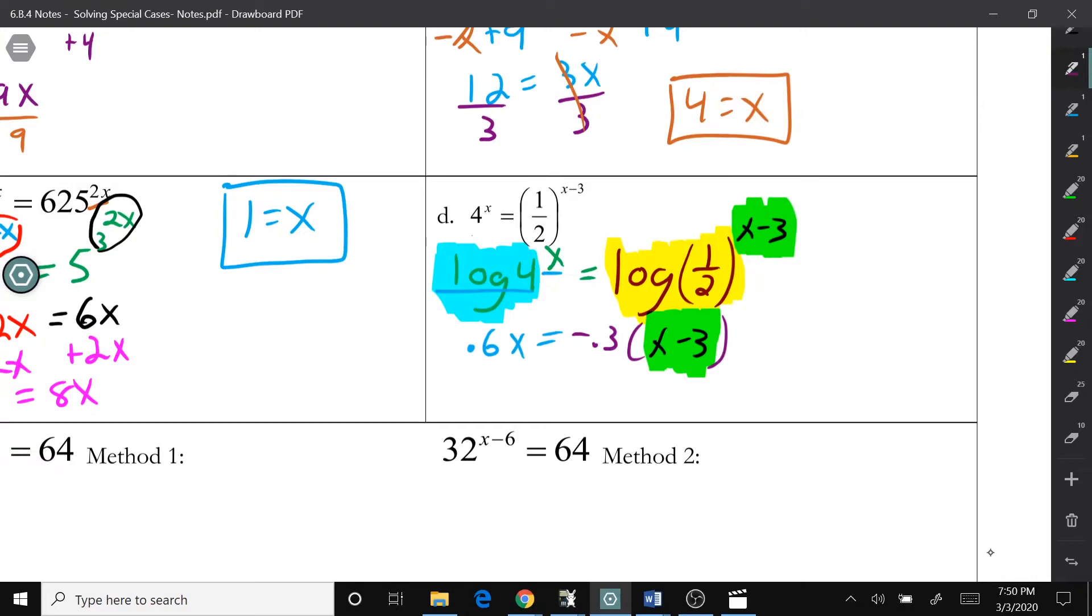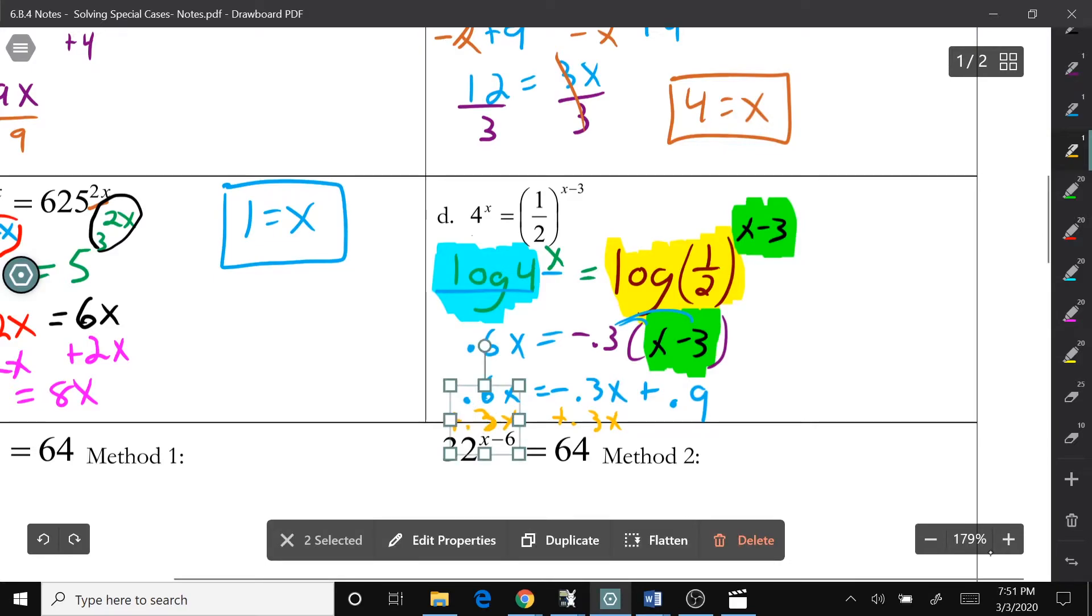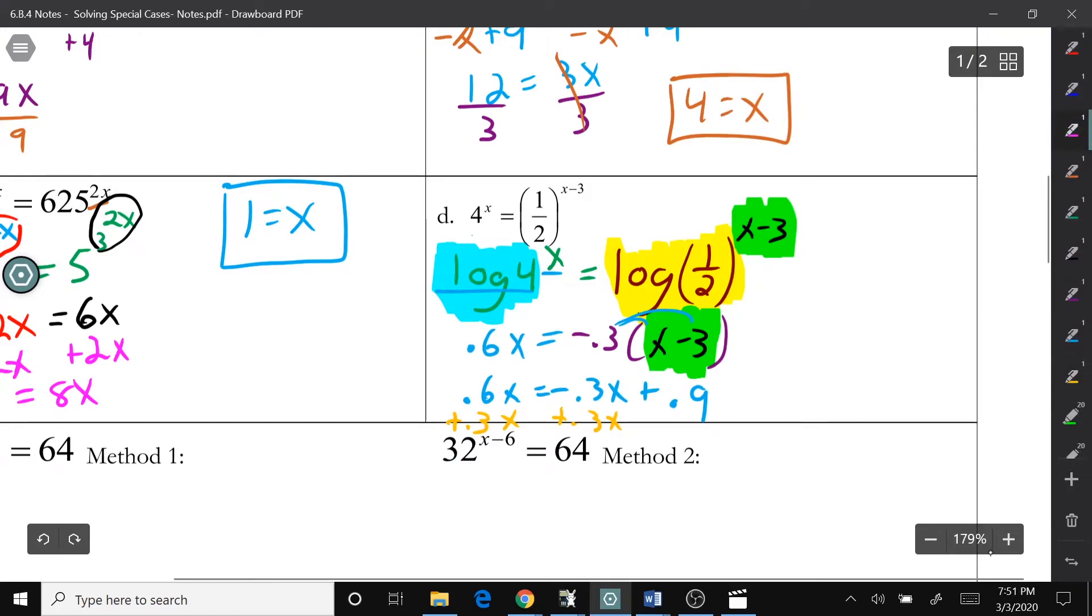Then, we need to simplify this. Distribute 0.6x equals negative 0.3x plus, we need to do negative 0.3 times negative 3. So, I'm doing that on my calculator, negative 0.3 times negative 3, and I get 0.9. Then, I'm going to add 0.3x to both sides. So, that will give me 0.9x equals 0.9. And we divide both sides by 0.9, x equals 1.